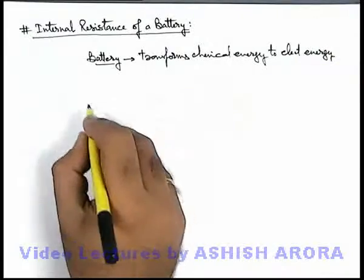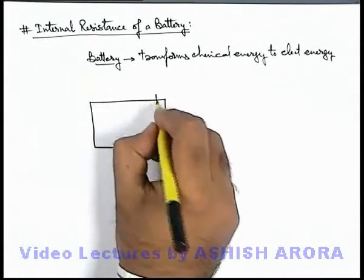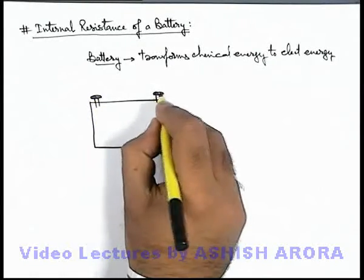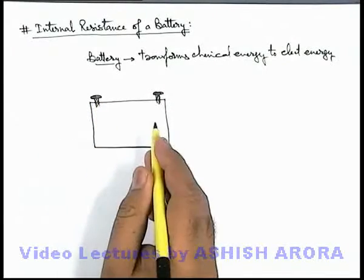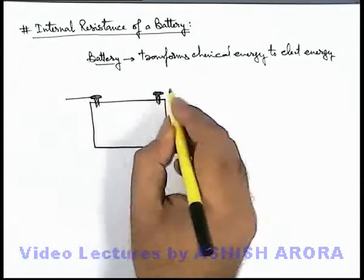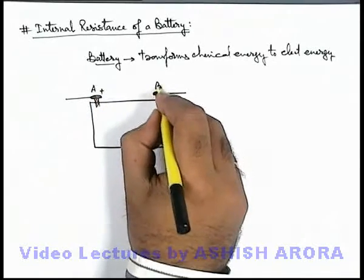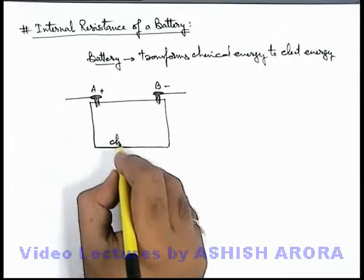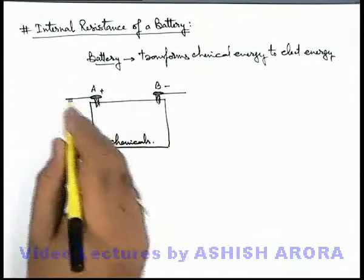Inside a battery, as you might have studied in early classes, there exist some chemicals due to which chemical reactions take place between the anode and cathode. Due to these chemical reactions, a continuous flow of electrons takes place. If terminal A is the positive terminal and terminal P is the negative terminal, then inside the battery there are chemicals, and due to their reaction some mechanism causes the current to flow.